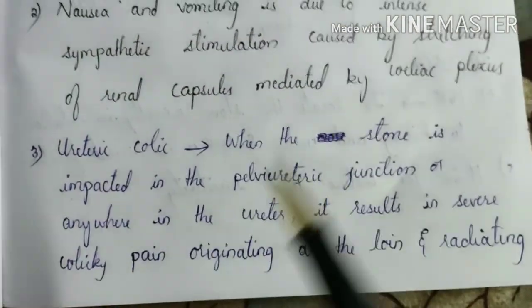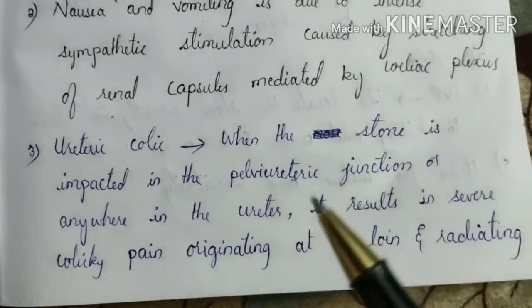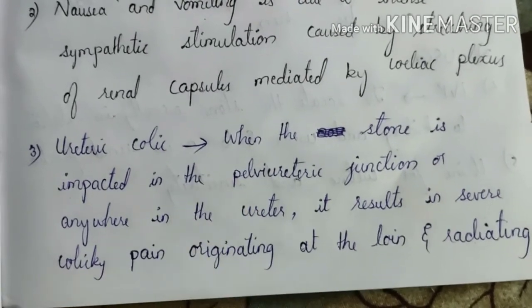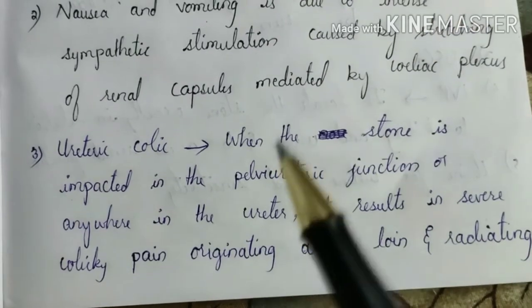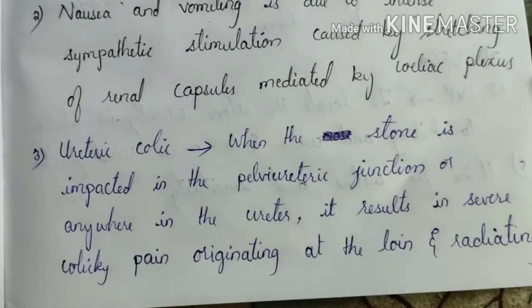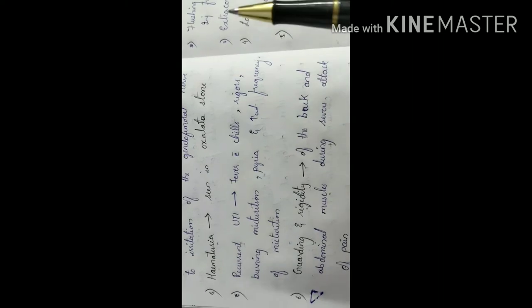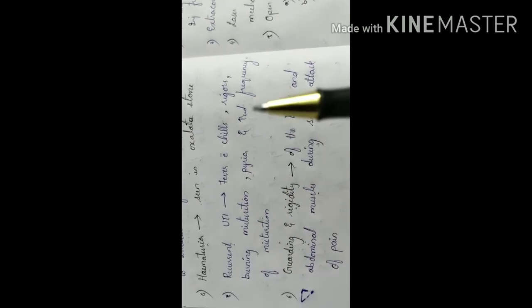There is also ureteric colic — when the stone gets impacted in the pelviureteric junction or anywhere in the ureter, this results in severe colic pain originating from the loin, radiating towards the groin, testicles, vulva, and the medial side of the thigh. There is referred pain due to irritation of the genitofemoral nerve. Hematuria is seen with oxalate stones because the sharp edges irritate the ureters, causing bleeding. There is recurrent UTI with fever, chills, rigors, burning micturition, pyuria, and increased frequency of micturition. There is also guarding and rigidity of the back and abdominal muscles during severe attacks of pain.